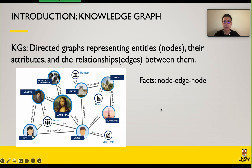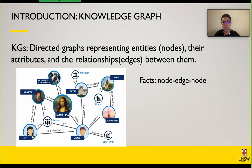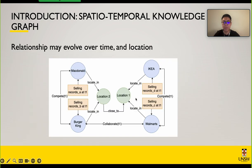A knowledge graph is a directed graph representing entities, their attributes, and relationships between them. Facts, stored in a node-edge-node structure, are how knowledge graphs store and represent knowledge. This knowledge graph clearly reflects the fact that DaVinci painted the Mona Lisa, with the two entities linked on the graph.